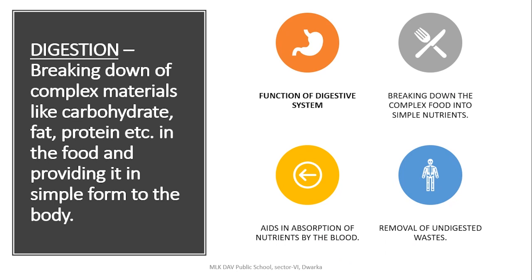Now, in chapter 1 of class 4 we are going to learn about the digestive system. What does the word digestion mean? It means breaking down of complex materials like carbohydrate, fat, protein, etc. in the food, and providing it in a simple form for the body to absorb and utilize for its various functions. We all eat food to grow, stay healthy and to do different functions, and that is what our digestive system helps us — it helps to provide the nutrients in the food to the body.